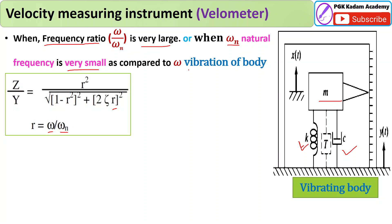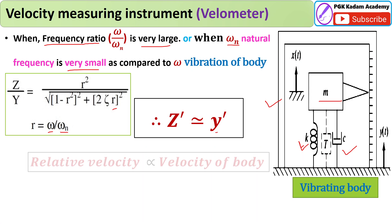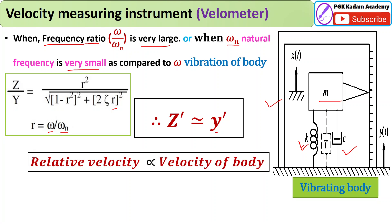When the frequency ratio omega over omega-n is very large — meaning the natural frequency omega-n of this instrument is very small compared to the vibration frequency of the body — the equation simplifies such that z-dot is approximately equal to y-dot. This means the relative velocity is in proportion with the velocity of the body.